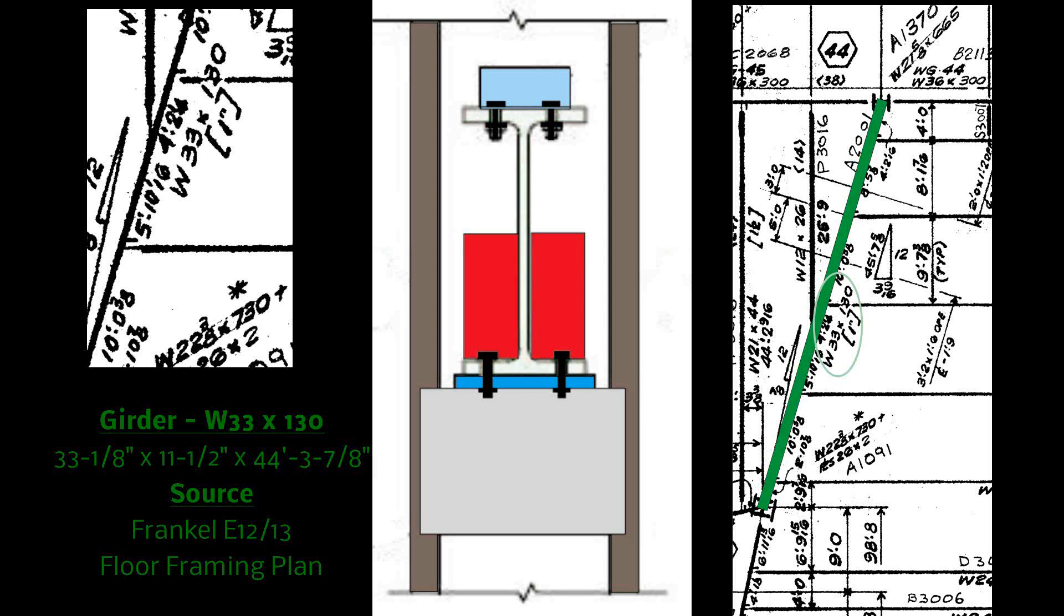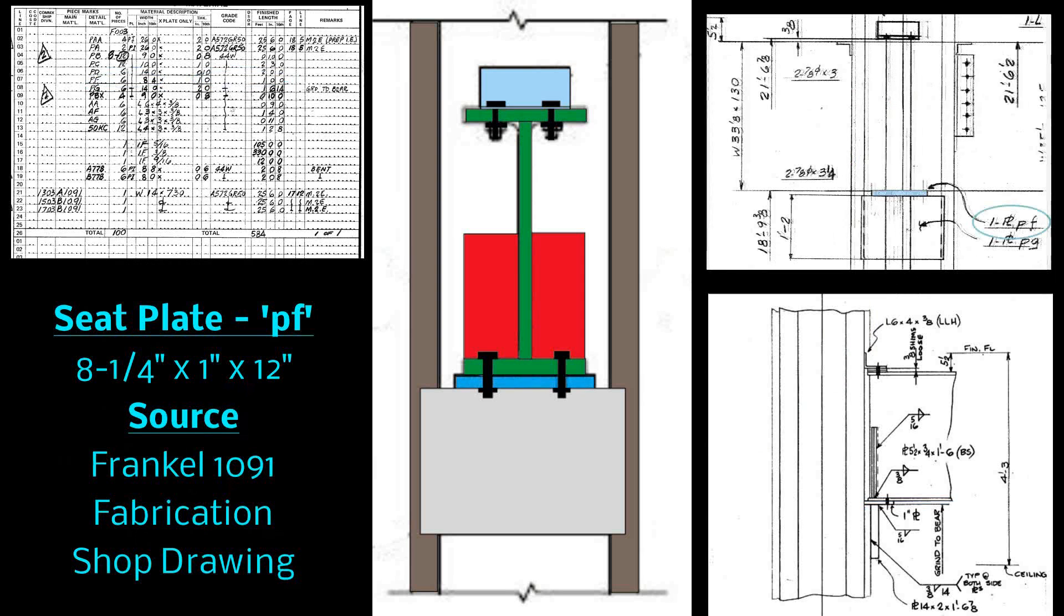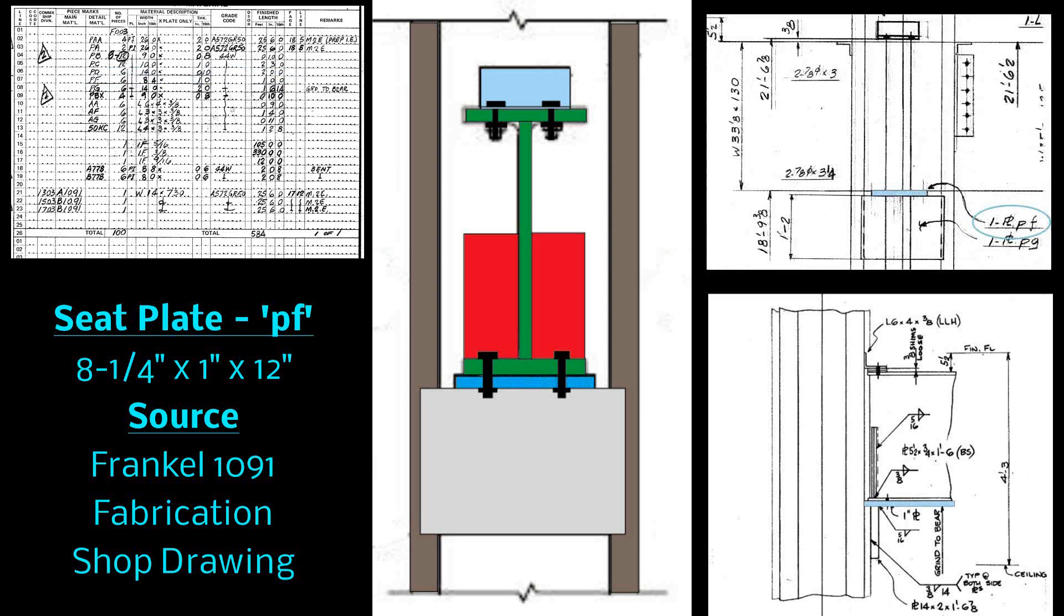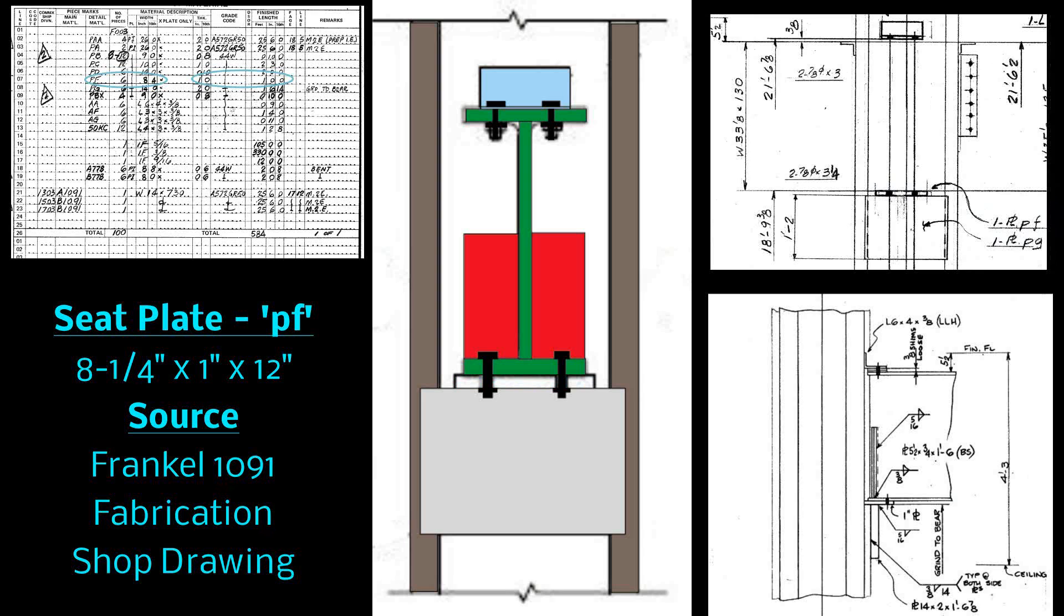The girder sits on a seat plate which is called plate PF. Plate PF is 8 1/4 inches by 1 inch by 12 inches. It can be seen in Frankel 1091 fabrication shop drawing. NIST strongly asserted that this plate was only 11 inches wide but it is in fact 12 and they have admitted this error now.